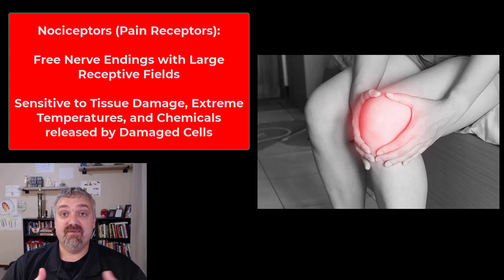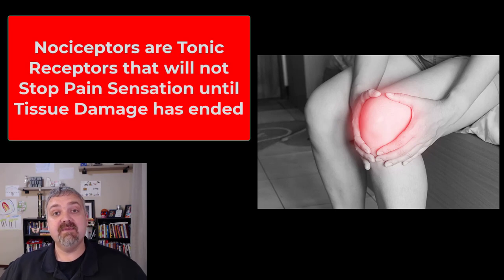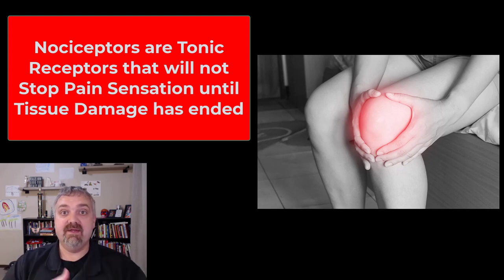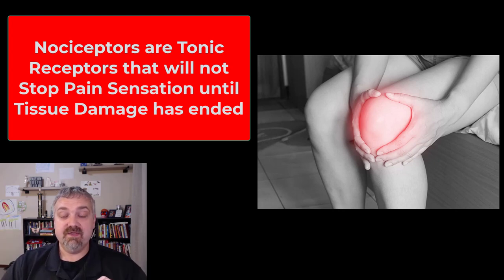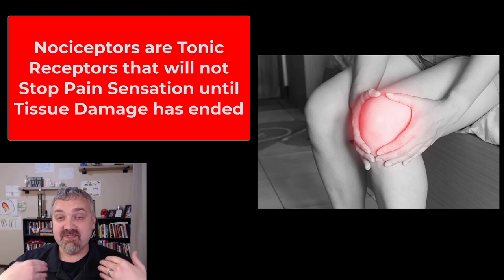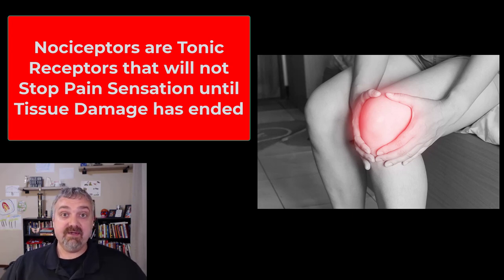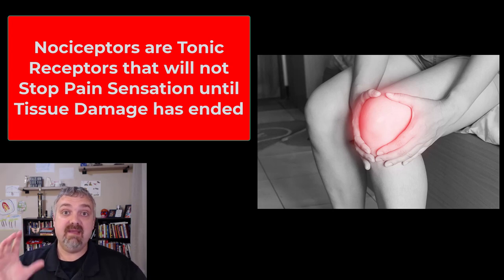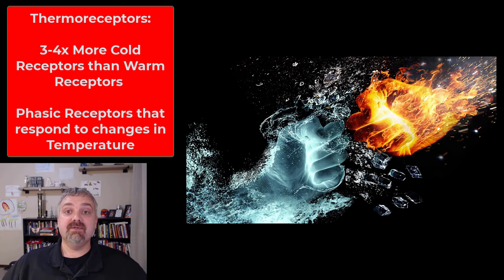Extremes of temperature — getting so hot or so cold — actually becomes painful. Pain receptors are tonic or slow-adapting, meaning if you hurt your knee, that knee is going to hurt as long as the tissue damage is still there. You can manage pain with ice and Advil, but the receptors keep telling your brain that knee hurts until the source of damage is gone. That's important — pain reminds you not to do further injury. A life without pain would lead to a lot of extra destruction in our body.